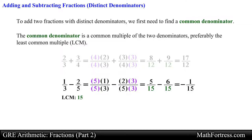If for some reason you can't figure out the least common multiple you are always free to multiply the denominators together to obtain the common denominator, and then you can multiply diagonally up to obtain the new numerators. The final step would be to add or subtract depending on what the problem is asking you to do.